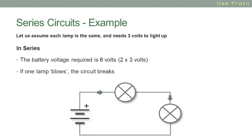Let's take an example. We'll assume here that each lamp is the same and each one needs three volts to light up. In a series circuit, if each bulb needs three volts, then you need a total of six volts to power the circuit. So you have your six volt battery, the current flows into one bulb and then into the next. And you'll see from this circuit that if one of the bulbs blows, then the entire circuit will break.